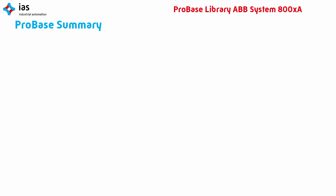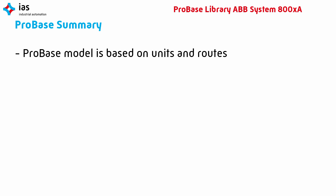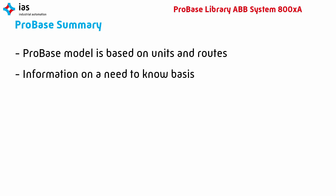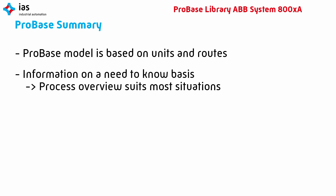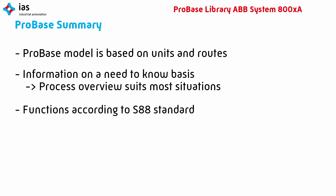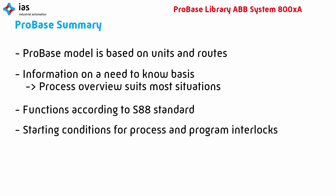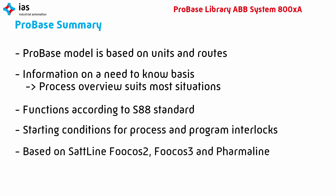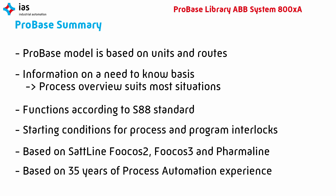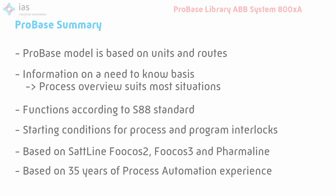To summarize ProBase: the modeling of ProBase is based on units and routes. The information is shown to the operator on a need-to-know basis. In most situations, the process overview gives enough information to the operator. The conditions of the functions are according to the S88 standard. Starting conditions for every function give the operator a clear overview of process and program interlocks. ProBase is based on Satellite Focus 2, Focus 3 and PharmaLine, so ProBase can rely on 35 years of process automation experience. For more information about ProBase, please feel free to contact IAS Industrial Automation.